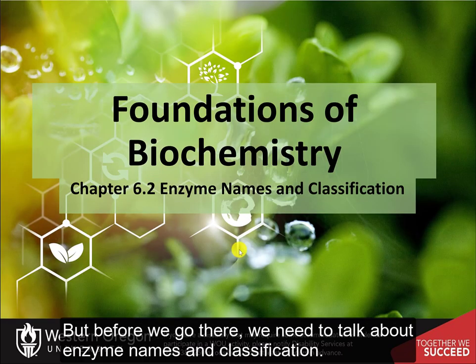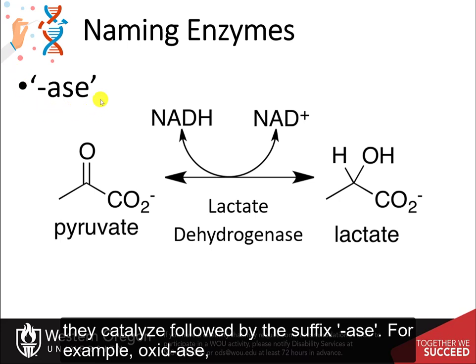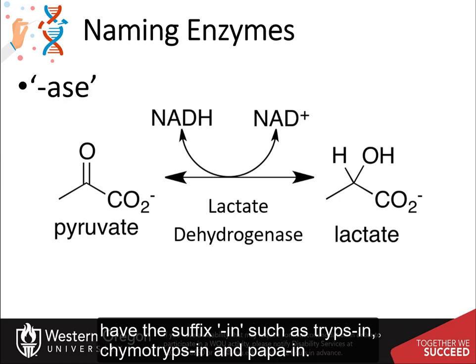Before we go there, we need to talk about enzyme names and classification. Enzymes typically have common names, often called trivial names, which refer to the reaction that they catalyze, followed by the suffix -ase. For example, oxidase, dehydrogenase, or carboxylase. However, individual proteolytic enzymes generally have the suffix -in, such as trypsin, chymotrypsin, and papain.